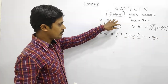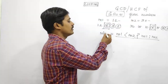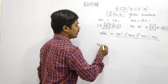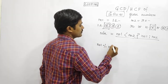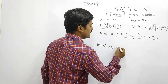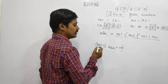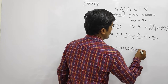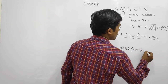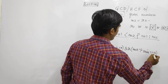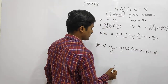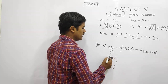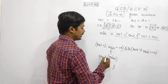Now, once we have the minimum number, we loop from the minimum downward. We check the condition: number1 modulus minimum equals zero, and number2 modulus minimum equals zero. If both conditions are true, minimum is our answer. We decrement minimum and continue the loop.